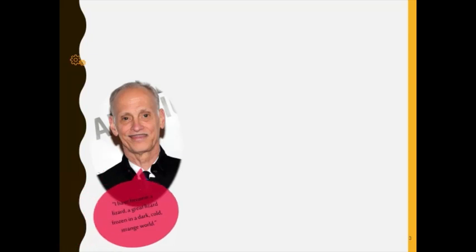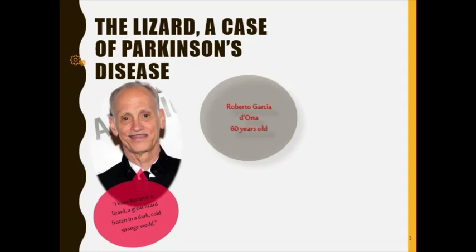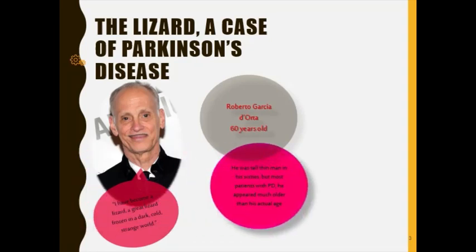'I have become a lizard,' he began. 'A great lizard frozen in a dark, cold, strange world.' His name was Roberto Garcia de Orta — a tall, thin man in his 60s. But like most patients with Parkinson's disease, he appeared to be much older than his actual age.